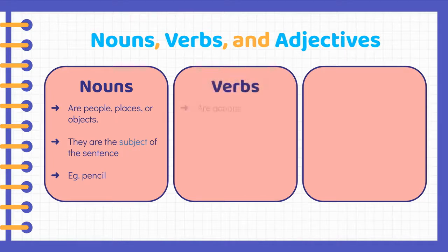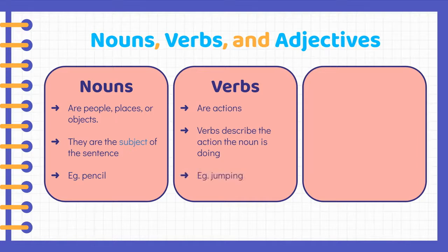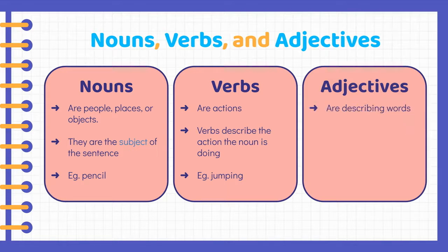Verbs are actions. Verbs describe the action the noun is doing. An example is jumping. Adjectives are describing words. Adjectives describe the noun. An example is pretty.